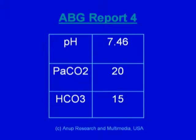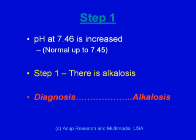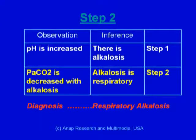The bicarb is 15. In step 1, we look at the pH. If the pH is above 7.45, there is alkalosis. This patient has alkalosis, and as stated earlier, we start writing the diagnosis from right to left — so we write alkalosis first. In step 2, we look at the PaCO2 in relation to alkalosis. The PaCO2 is decreased along with alkalosis, so this alkalosis is respiratory. We write 'respiratory' before 'alkalosis,' making it respiratory alkalosis.